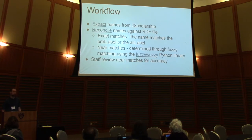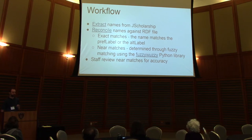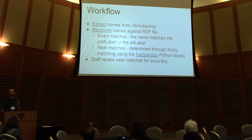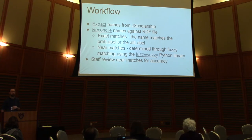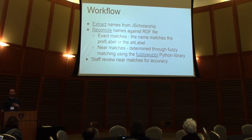The workflow began with a script to extract all the names from the ETD community in JScholarship. With that extract we then reconciled those names against the RDF file. That reconciliation process produced two lists: one of exact matches where the name in DSpace matched either the prefLabel or one of the altLabels in the RDF file, and also a near-match list which used fuzzy matching to determine similar entries that weren't exact matches. This was done using the FuzzyWuzzy Python library.